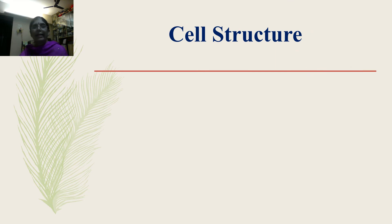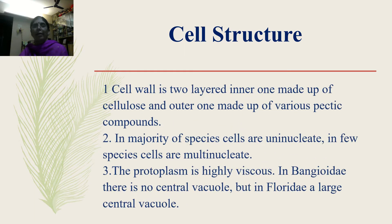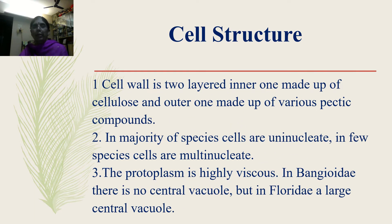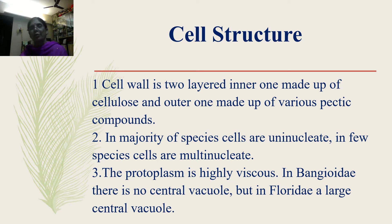Now let us study the second subtopic: cell structure. Any individual, be it a plant or an animal, is made up of cells — the cell is the fundamental structural and functional unit. The cell is surrounded by a cell wall, which in plants is two-layered: the inner layer is made up of cellulose and the outer layer is made up of various pectic compounds, such as alginic acid and carrageenan. In the majority of species, cells are uninucleate; in few species, cells are multinucleate.